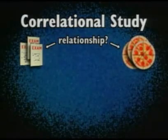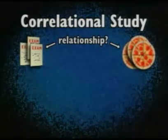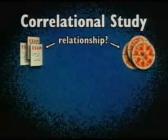For example, a researcher might want to know if there's a relationship between the number of exams given at a university in one week and the number of pizzas that the local pizza place sells during the same week. The researcher can't control how many exams are given or how many pizzas are sold, but she can see if there's a relationship between the two, and if so, what kind of relationship it is.